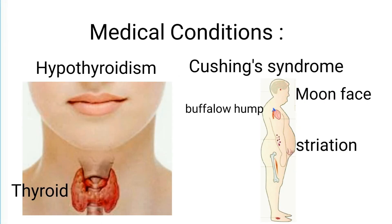Number 3, Medical Conditions. There are many medical conditions which can cause obesity. Number 1, Hypothyroidism. This is a low-functioning thyroid gland which produces less thyroid hormone, slows body metabolism, and causes more accumulation of fat. Number 2, Cushing Syndrome. This condition develops with imbalance of cortisol hormone and patient presents with moon face, buffalo hump, and particularly pink-colored striations on the belly area.